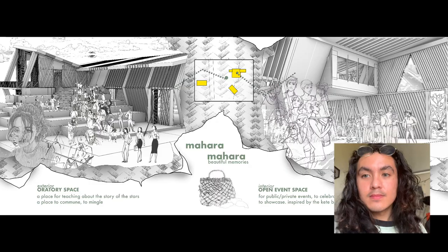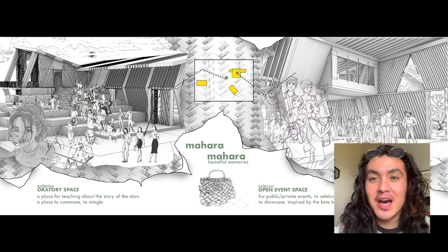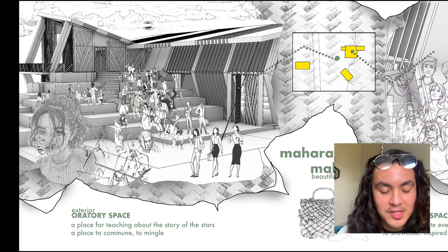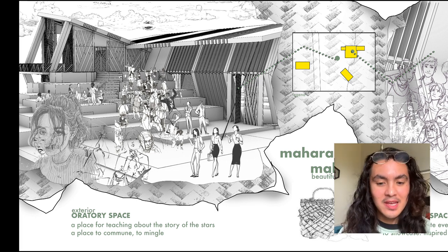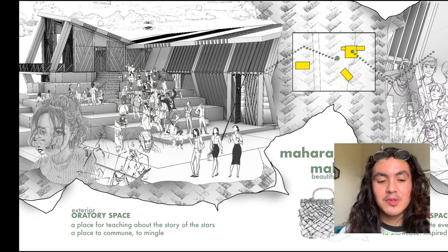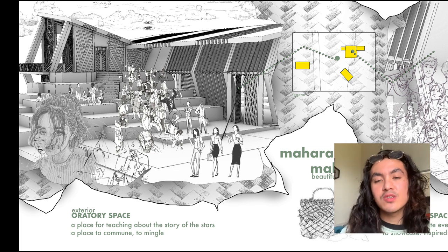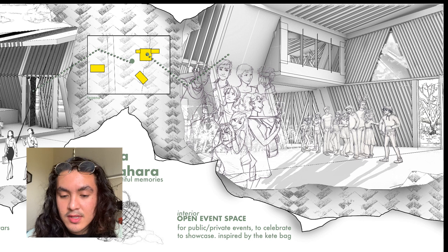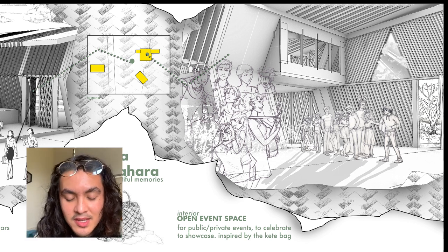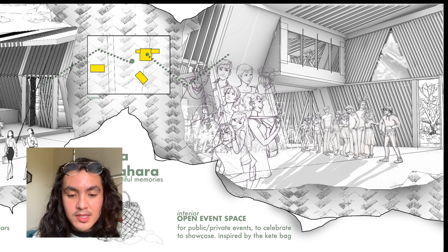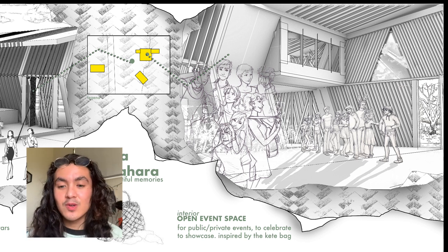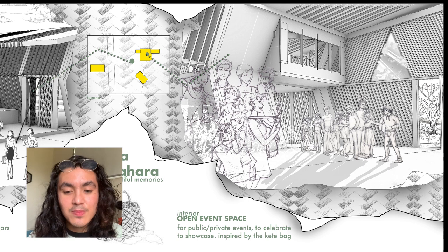Now for some perspectives of Mahara Mahara — my favorite part. The first space is the oratory space, a place for teaching about the story of the stars, for communing and mingling. I see it as a great public seating opportunity where people from the street can simply sit and enjoy themselves. Next is the open event space in the interior, meant for public or private events to celebrate and showcase. It's inspired by the kete fakairo bag — I really wanted you to feel as though you're inside the bag looking out, because the purpose of a bag is to hold precious things, and the precious things in this building are the people.